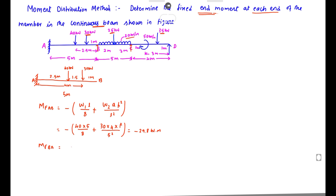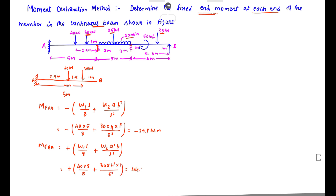For MF_BA, we take the positive formula: plus W1·L/8 plus W2·a²·b/L². Substituting: plus 40 × 5/8, plus 30 × 4² × 1 / 5². Solving this, we get MF_BA = +44.2 kN·m.